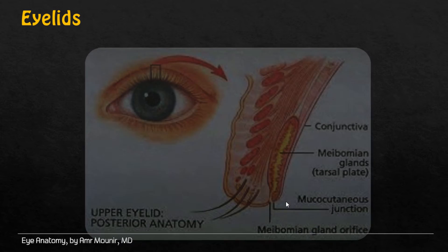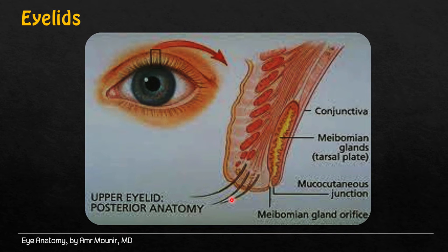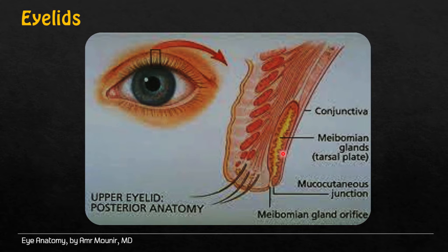Eyelids are formed of two parts: the anterior lamellae, which is a muscular part formed mainly of ebocleosiculi muscles, and the posterior part, called posterior lamellae, which is formed mainly of the tarsus, which includes mypobian glands.